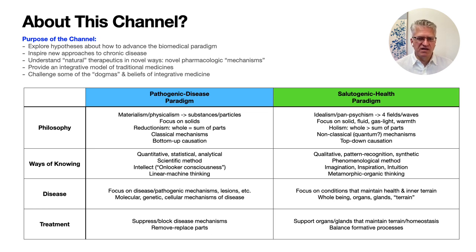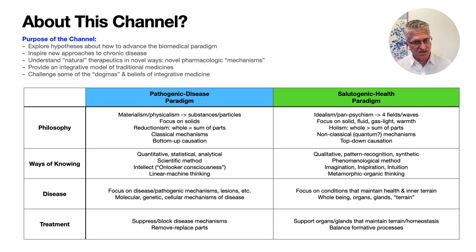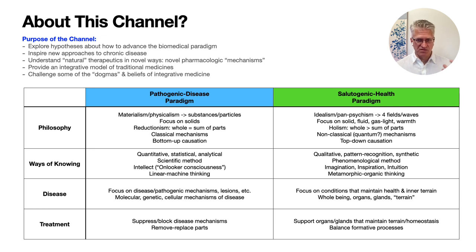Disease in this way of thinking is more a situation in which the normal forces that maintain health have become imbalanced. The focus is more on health and maintaining health, or what we might call our inner terrain. This is what I've referred to as the salutogenic model based on Antonovsky's work, the medical sociologist who coined the term in the late 1970s. This is looking at whole organ systems, glands, and how they all come together to maintain our inner terrain, or what we call homeostasis in modern physiology.